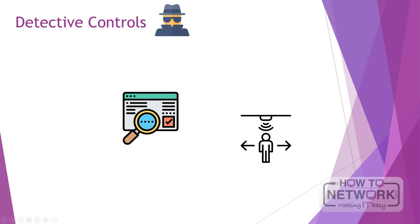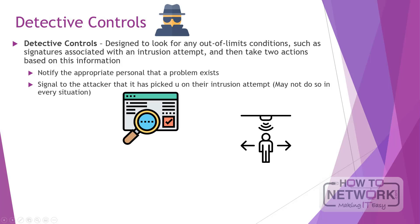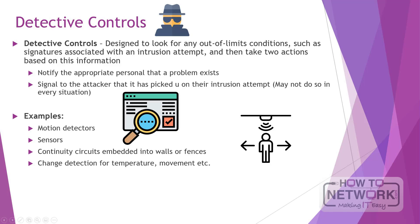Detective controls, also known as detection controls, are designed to look for any out-of-limits conditions, like signatures associated with an intrusion attempt, and then take two actions based on this information. Firstly, the detective control will notify the appropriate personnel that a problem exists, allowing an effective response to the incident to begin. Secondly, the detection controls can signal to an attacker that it has picked up on their intrusion attempt, which would lead them to believe that security personnel will be responding to their attack. The goal of this is to deter the attacker from continuing their efforts. However, a detection control may not always want an attacker to know it has caught their behaviour. Physical detection systems include motion detectors, sensors, and continuity circuits embedded into walls or fences.